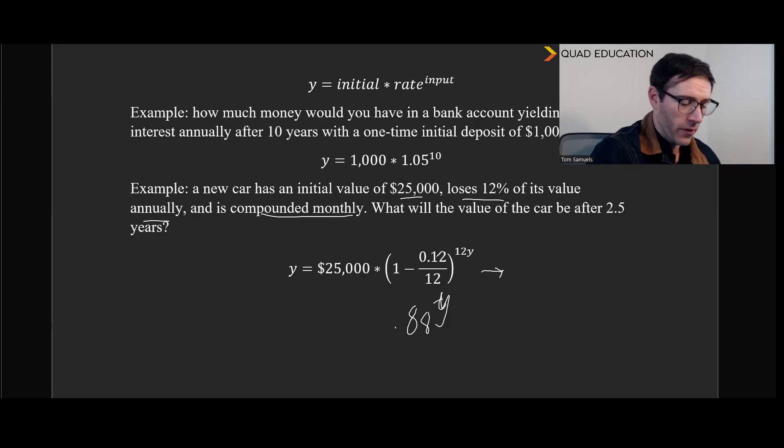So I did 12 here just to make this nice, even 0.01. So that's going to be 0.99 to the power of 12 times whatever that number of years is, because we're doing that 12 times in a year. And so in the case of this question here, 2.5 is what we put in for Y right there. And just to put all these numbers together, it's going to be 25,000 times 0.99 to the power of 30, because 12 times 2.5 is 30.